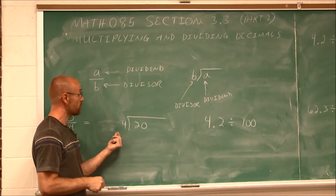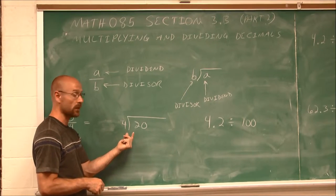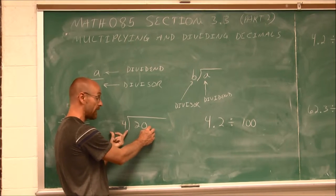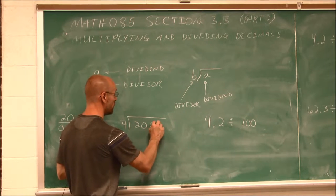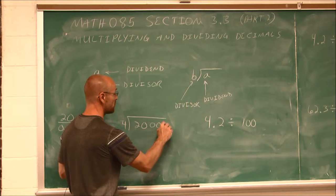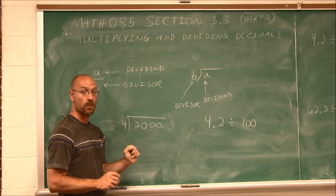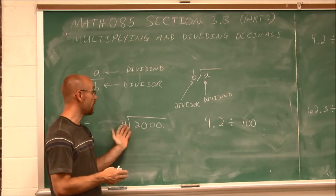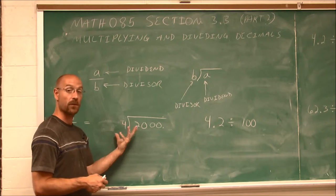I'm going to move the decimal two spots to the right to make 0.04 a whole number. What I do to the divisor, I must also do to the dividend. The dividend 20 doesn't have a visible decimal, so I imagine one and move it two spots to the right as well. That determines where the decimal place will be, and now we can do the division without worrying about it.